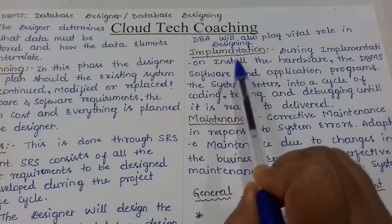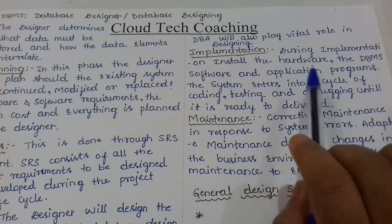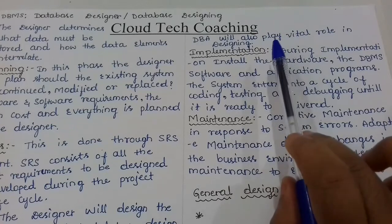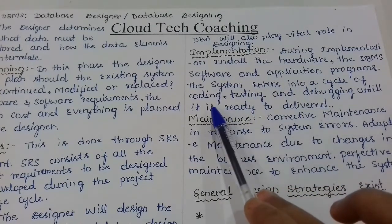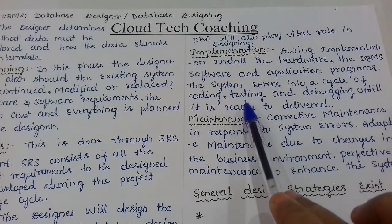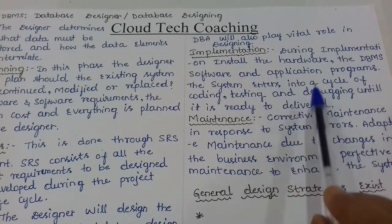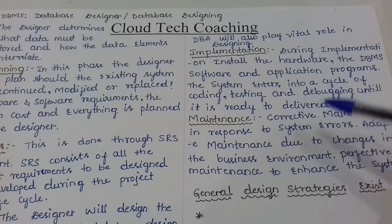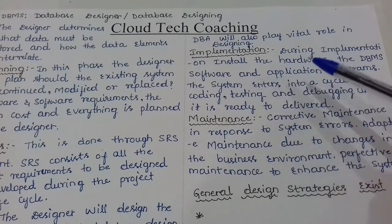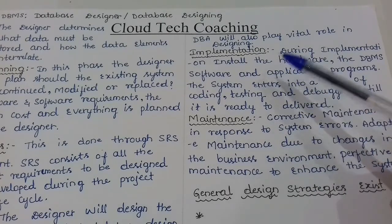The next phase is implementation. During implementation, the hardware, DBMS software, and application software programs are installed. Before that, the coding phase is completed — the system enters a cycle of coding, testing, and debugging to check whether any errors exist and fix them. This cycle continues until the system is ready to deliver, after which implementation is completed.